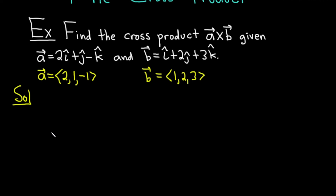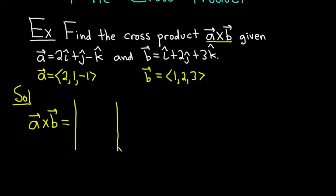Let's go ahead and start the computation of the cross product. So A cross B — by the way, it matters. The question says A cross B, so it's important to find A cross B. B cross A is actually not the same. This is equal to a determinant where in the first row you write i-hat, j-hat, k-hat, in the second row you write vector A as 2, 1, negative 1, and in the third row you write vector B as 1, 2, 3.